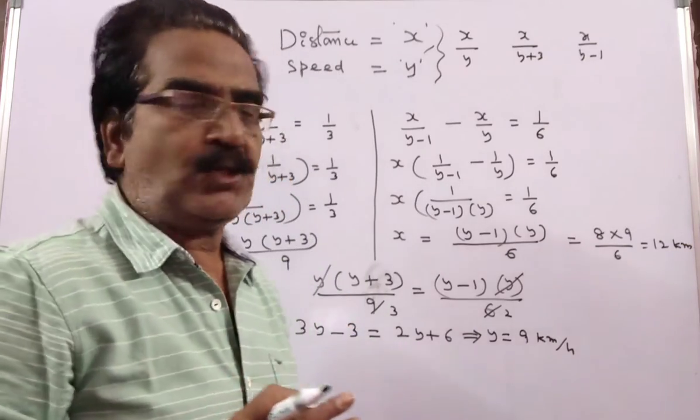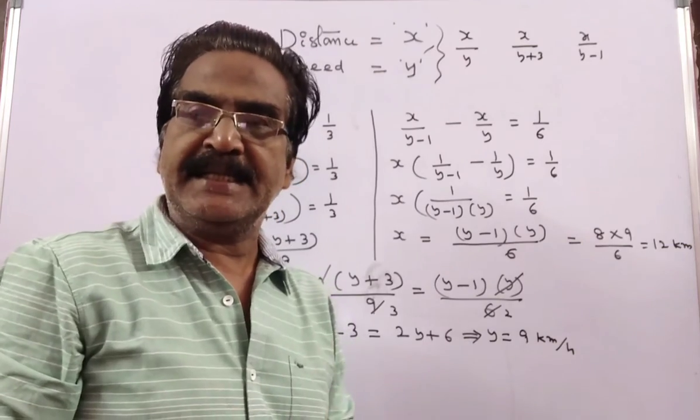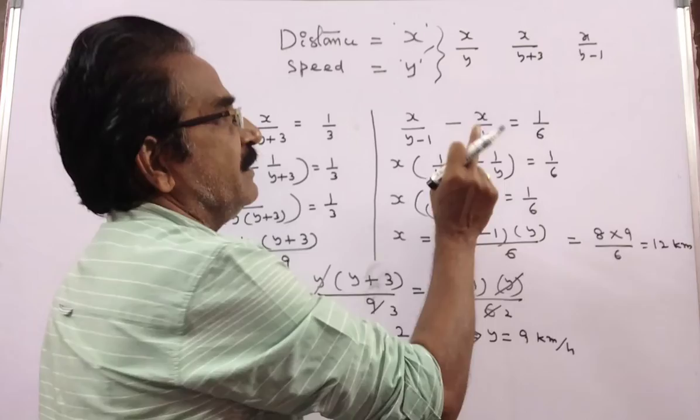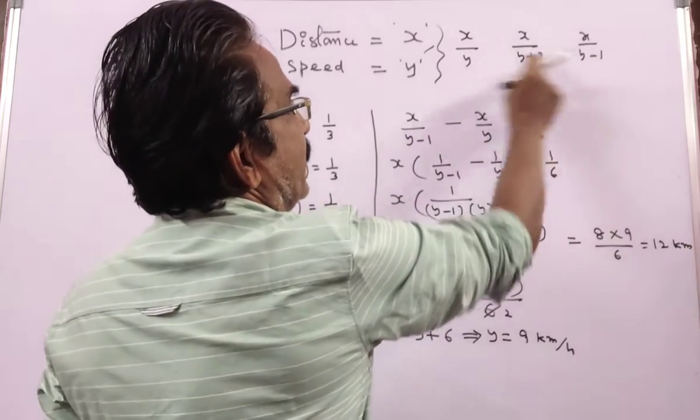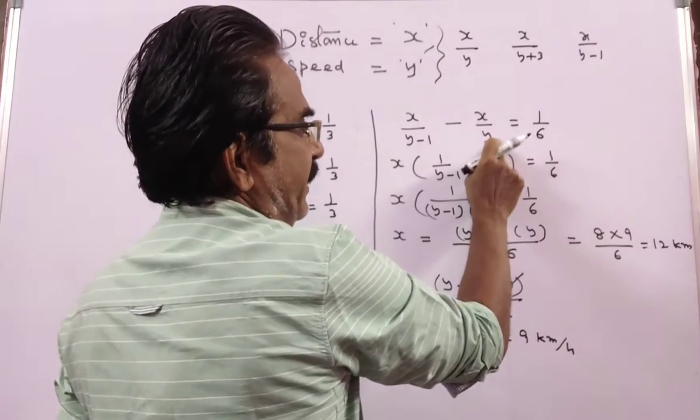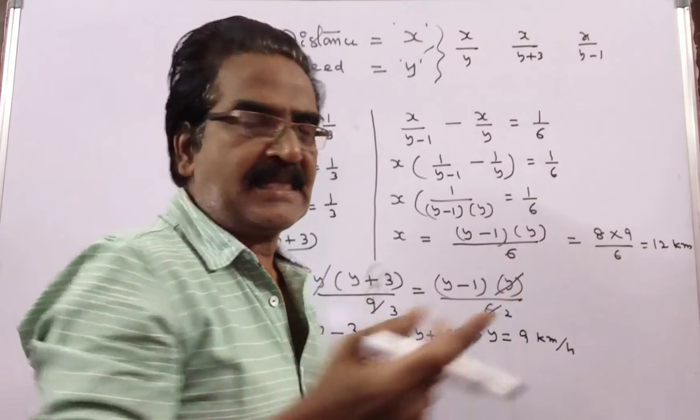Coming to case 2, if he moves at 1 kmph slower, it takes 10 minutes more. That means x by (y minus 1) minus x by y equals 10 minutes, which is 10 by 60, or 1 by 6 hour.